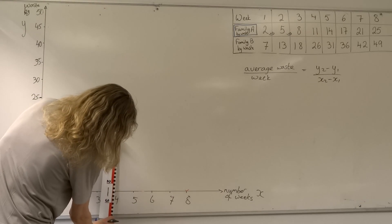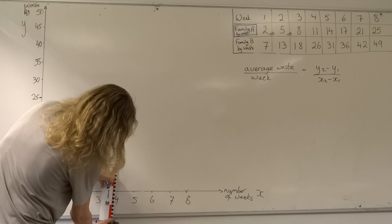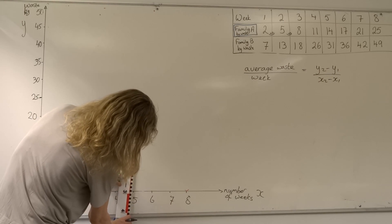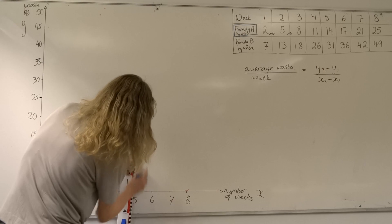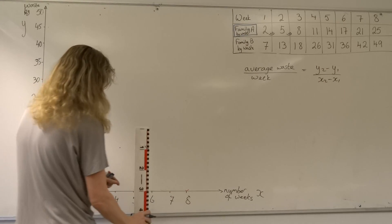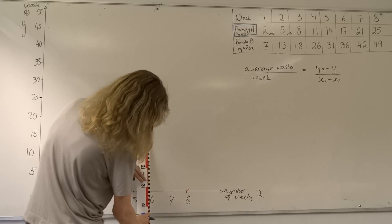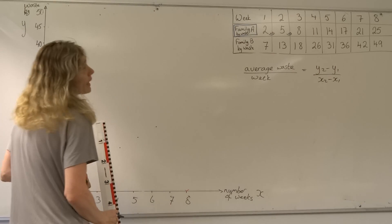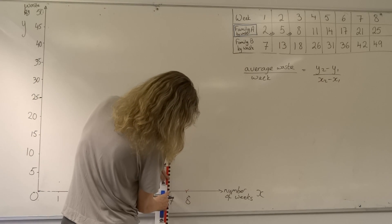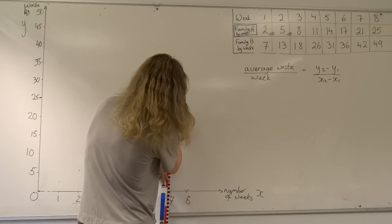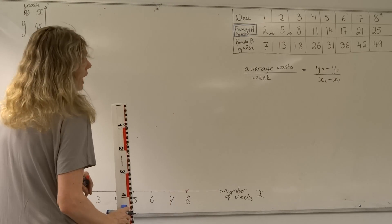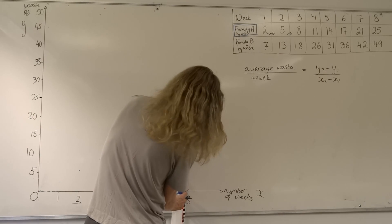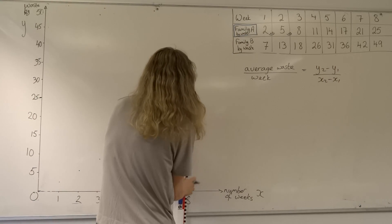At week four it would be 11 kilos, which will be 22 centimeters. At week five it's 14, which would be 28 centimeters. At week six it's 17, double seven, it's 34, so we have 34 centimeters for 17 kilos. At week seven it's 21 kilos, which will be 42 centimeters because one kilo is represented by two centimeters. And at week eight we'll finish off with 25 kilos, which will be 50 centimeters. So here we have it for family A.